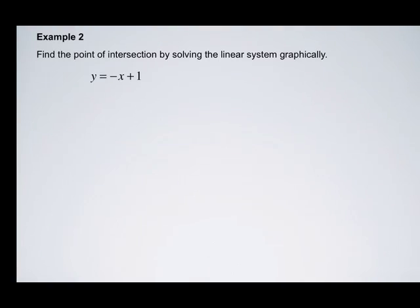So now what I'd like you to do is find the point of intersection of the linear system y equals negative x plus 1 and y equals 2x plus 4. You can either graph this on Geometry Sketchpad or you can take out a piece of grid paper and graph the two linear equations.